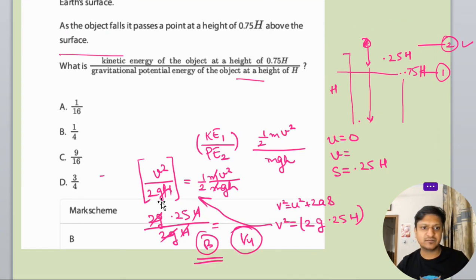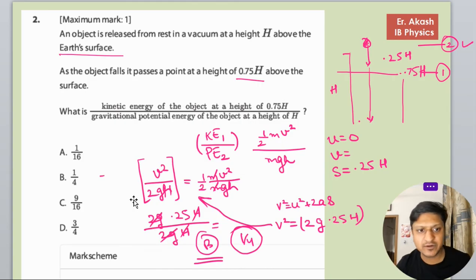Now we will check the mark scheme. B option is the right option. So what we have done in this question: first calculate the kinetic energy and potential energy. For kinetic energy we calculated the velocity at 0.25h distance and then we have just taken the ratio.